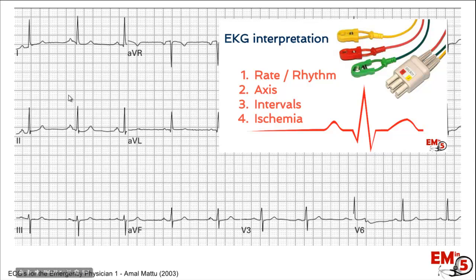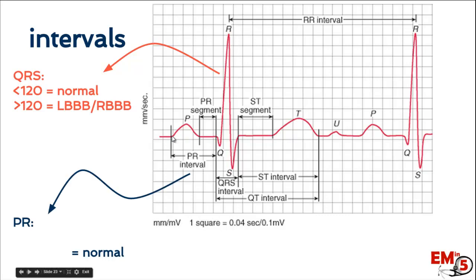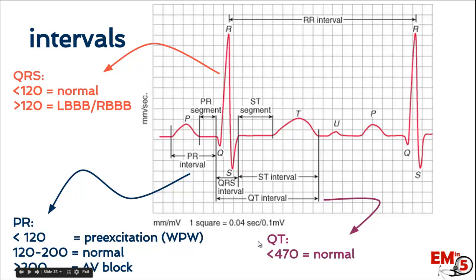Next, we're going to look at the intervals — three to assess. First, the QRS complex: normal is less than 120ms; greater than 120ms may indicate a left or right bundle branch block. Second, the PR interval — from the beginning of the P to the beginning of the Q wave: normal is 120 to 200ms. Less than 120 may indicate pre-excitation or WPW; greater than 200 may indicate an AV block. Lastly, the QT interval: normal is less than 470ms; greater predisposes to V-tach or V-fib. These values are printed on your standard EKG.